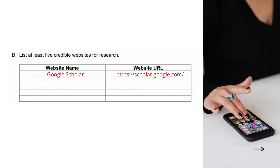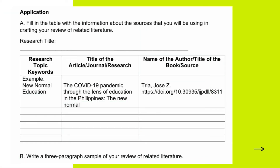In Part B, you have to research online for at least five credible websites for research. Write the website name — for example, Google Scholar — and the website URL, such as scholar.google.com. Note that not everything uploaded on the internet is credible and reliable, so you have to be careful. Read researches and studies only from these credible websites.